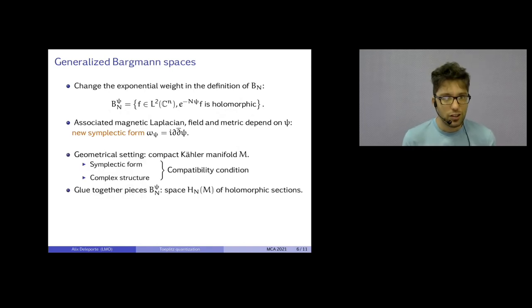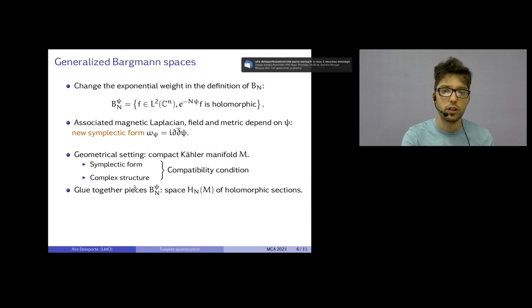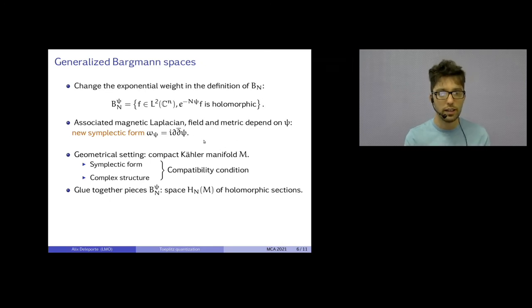Okay. Now, let's generalize again. So, I take, say, a manifold, which is compact. And, on this manifold, I have a notion of holomorphicity. So, I have a complex structure. And, on this space, I also have a symplectic form. And, I want this symplectic form and the complex structure to be compatible with each other. What this means is that I can write omega as i dd-bar of some function psi locally. So, locally, I can build my Bergman spaces, my weighted Bergman spaces.